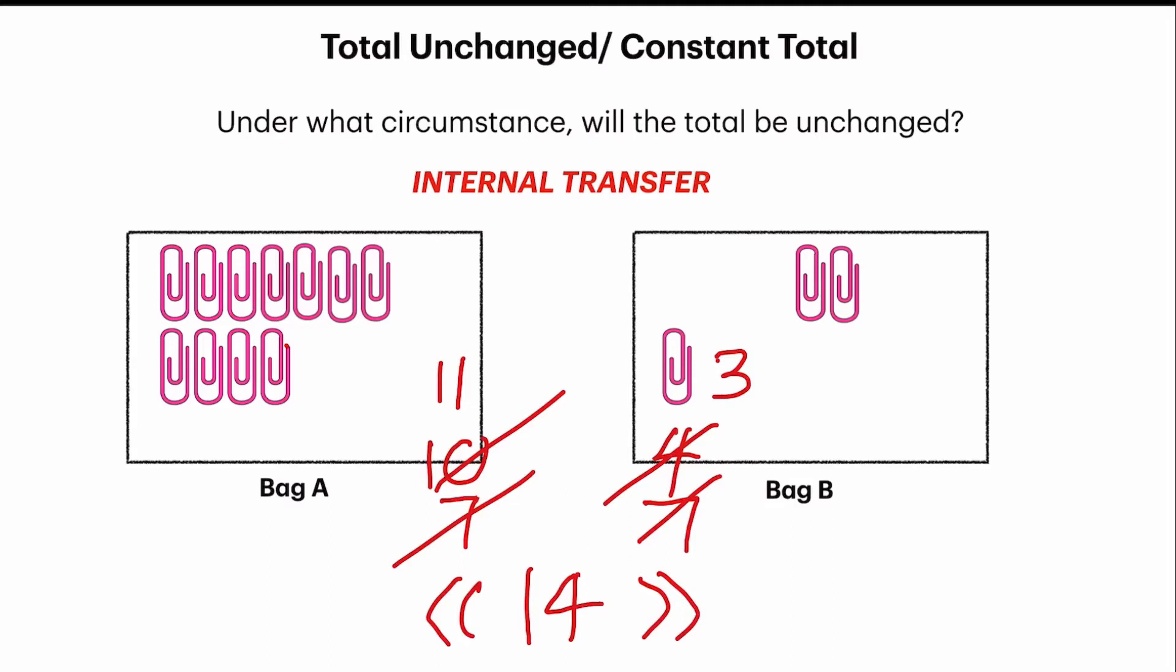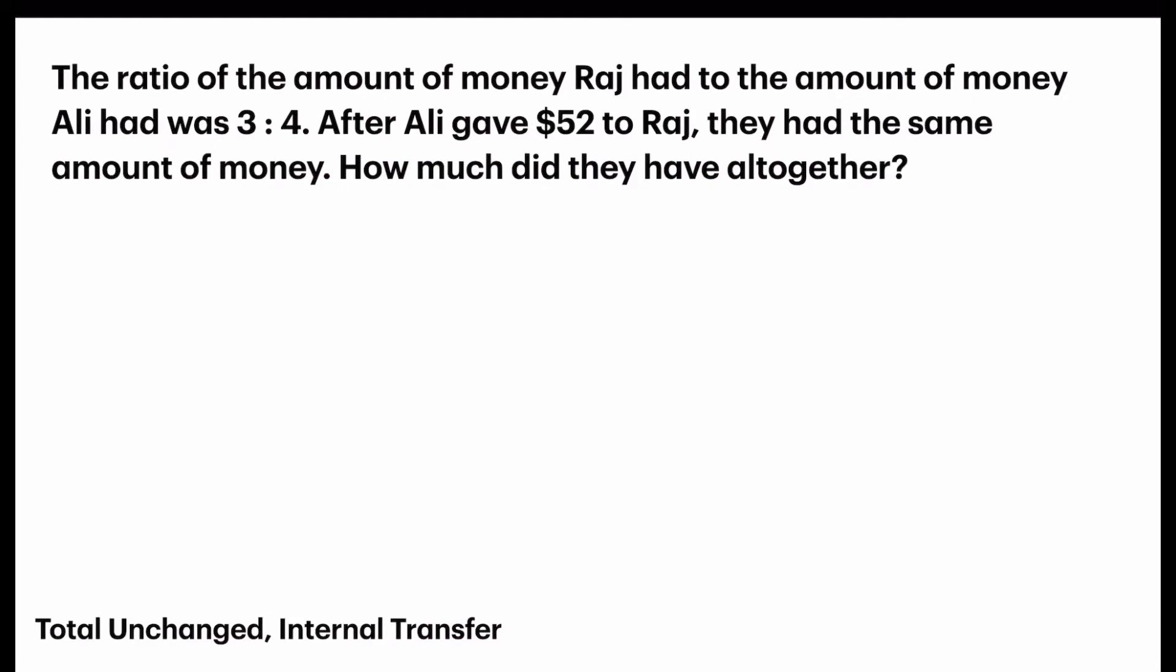So, how do we apply this concept of total unchanged in ratio word problems? Let's take a look at a few examples. Let's take a look at the first question we have here. The ratio of the amount of money that Raj had to the amount that Ali had was 3 is to 4. After Ali gave $52 to Raj, so I drew an arrow here to indicate the transfer of $52, they had the same amount of money. Now, you observe, I always have 2 sets of ratio to compare. But in this case,